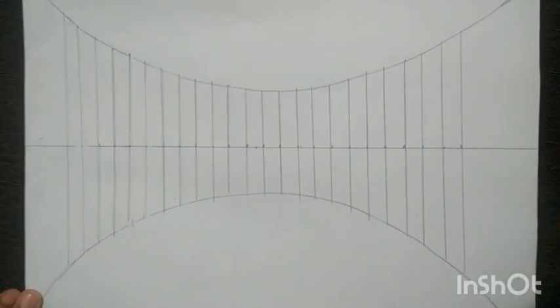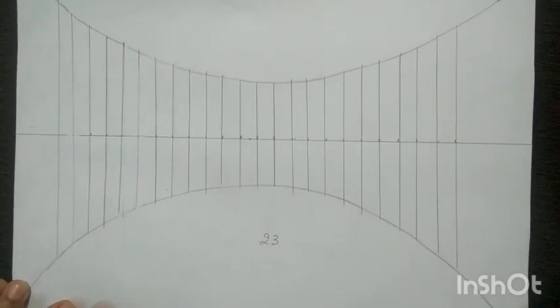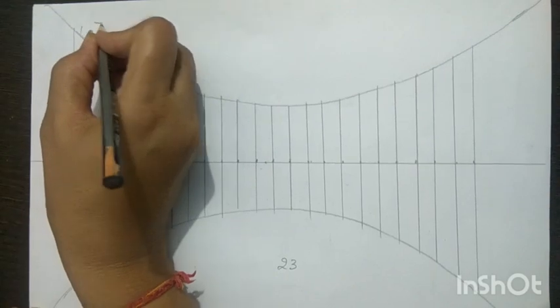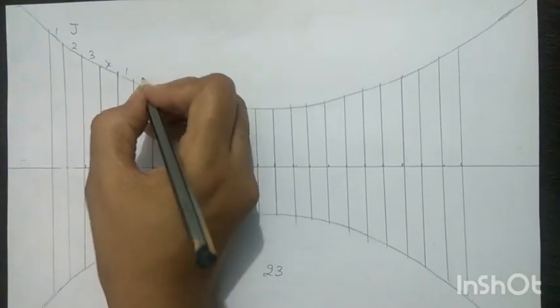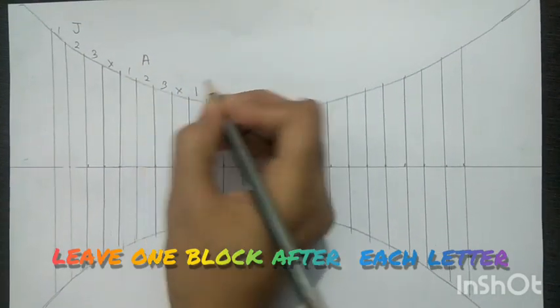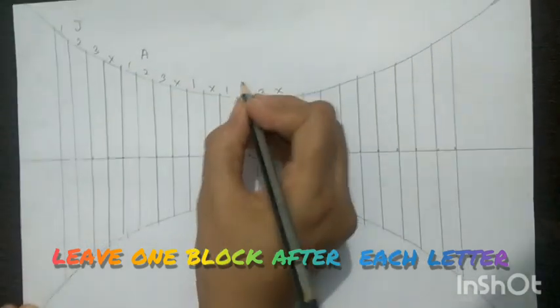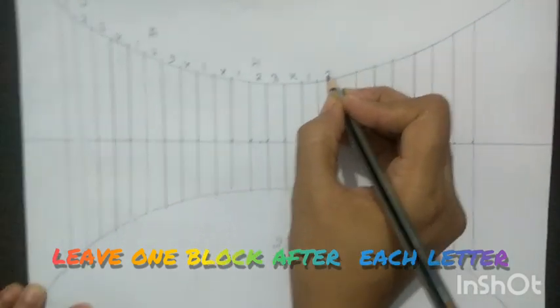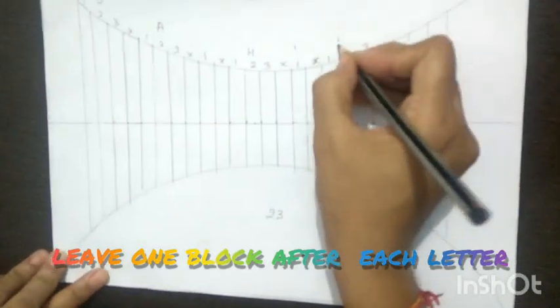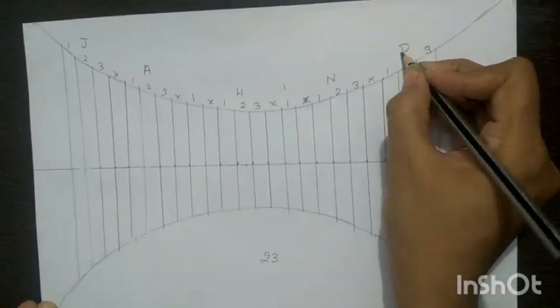Hello students, today we will write JAIHIND in semicircle graph. For it we need 23 blocks: one, two, three blocks for J; three blocks for A; one block for I; then one, two, three blocks for H; one for I; one, two, three for N; and one, two, three for D. So we need total 23 blocks for JAIHIND writing.